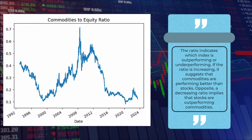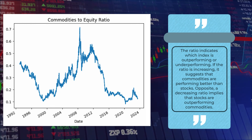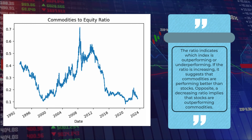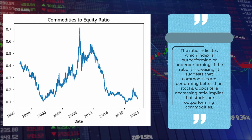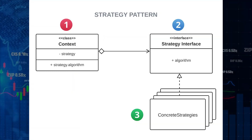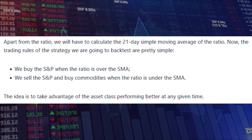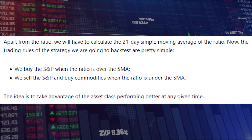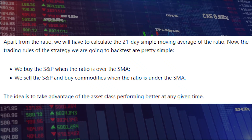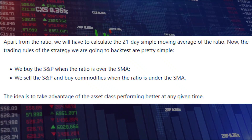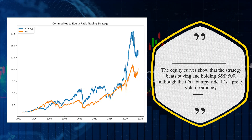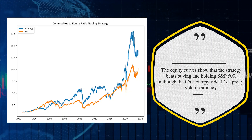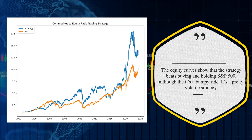If the ratio is increasing, it suggests that commodities are performing better than stocks. Conversely, a decreasing ratio implies that stocks are outperforming commodities. Let's backtest the strategy in Python, and we use the following trading rules as shown on the screen. The idea is to take advantage of the asset class performing better at any given time. The equity curves show that the strategy beats buying and holding S&P 500, although it's a bumpy ride.